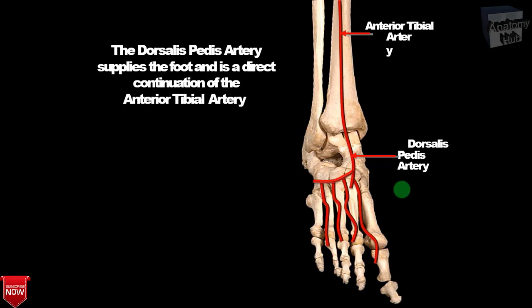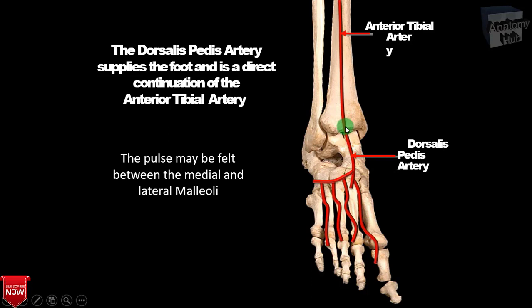The dorsal pedis artery is actually the direct continuation of the anterior tibial artery. It supplies the foot, lying superficial in front of the lower end of the tibia where its pulsation can easily be felt in a living subject. It passes in front of the ankle joint, becoming the dorsal pedis artery. The pulse may be felt between the medial and lateral malleoli.